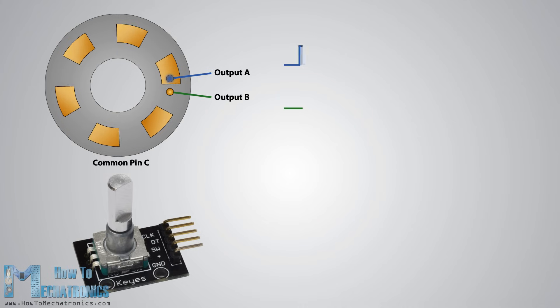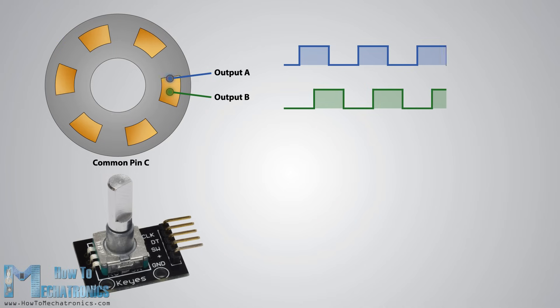Now, when the disk will start rotating step by step, the pins A and B will start making contact with the common pin and the two square wave output signals will be generated accordingly. Any of the two output pins can be used to determine the rotation position if we just count the pulses of the signal.